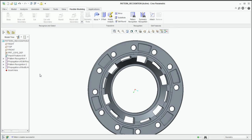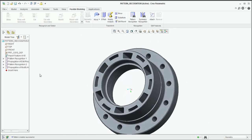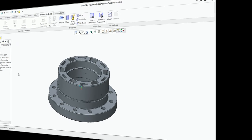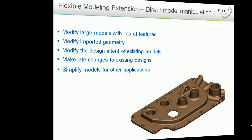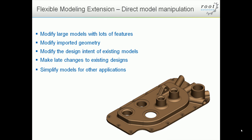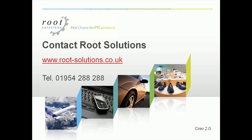As you can see, Flexible Modeling inside Creo Parametric offers users a unique capability when it comes to editing their designs. Whether those designs have large amounts of history or no history at all, you simply select the geometry that you wish to make an edit to, make your changes, safe in the knowledge that if there is history it's protected, and if there's no history you can start to build your own unique dimensions that you can use over and over again. If you have any further questions relating to this product or any other product offered by PTC, please contact Root Solutions on the information shown. Thank you very much for watching.